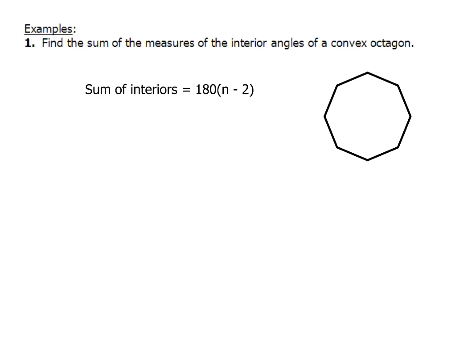In example one, we need to find the sum of the measures of the angles of a convex octagon. An octagon is an eight-sided figure, so n is going to be 8. The sum of the interior angles is going to be 180 times (8 minus 2). Since 8 minus 2 is 6, we have 180 times 6, which gives us 1,080 degrees.